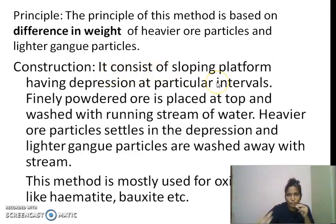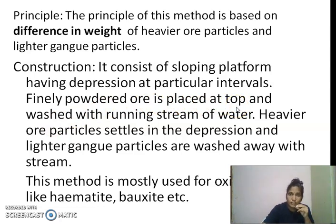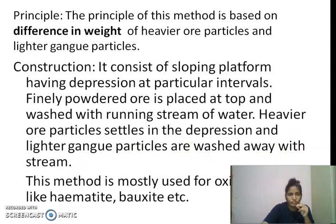It consists of a sloping platform having depressions at certain intervals. Finely powdered ore is placed at the top and washed with a running stream of water. Heavier particles settle in the depressions, and lighter gangue particles are washed away with the water stream. This gravity separation method is mostly used for the concentration of oxide ores like hematite and bauxite.